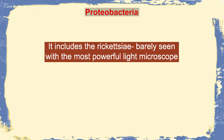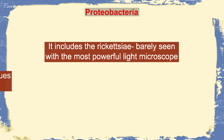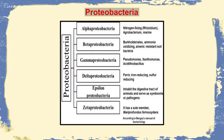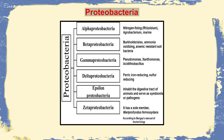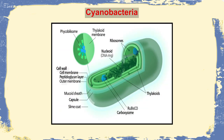Proteobacteria also includes Rickettsia, which is barely visible even with the most powerful light microscope and can only be cultivated in living tissues such as fertilized eggs. Proteobacteria can be further subdivided into alpha, beta, gamma, delta, epsilon, and zeta proteobacteria.